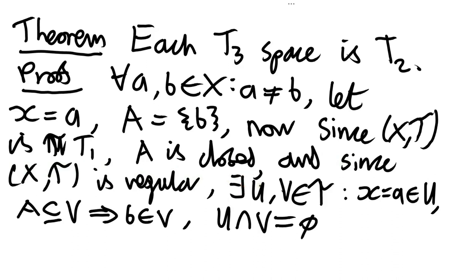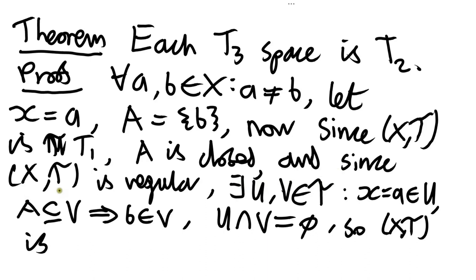These open sets don't intersect with each other — we get that from our definition of regularity. So for our pair of points we've found a pair of open sets, one containing each point, which don't intersect. So our space is going to be Hausdorff T2.